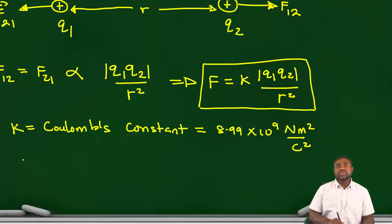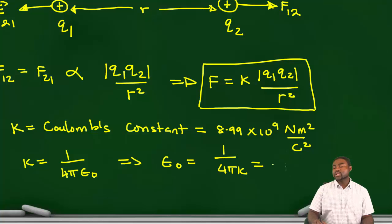It is worthwhile for you to know that K is equal to 1 over 4π epsilon naught, which means that epsilon naught, which stands for the permittivity of free space, will be equal to 1 over 4π K. If you do your calculations, it will end up being 8.85 times 10 to the power minus 12 Coulomb squared Newton meters squared.